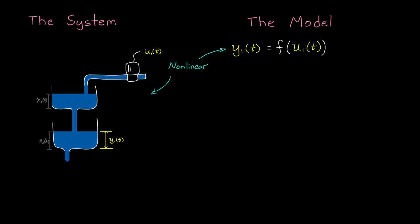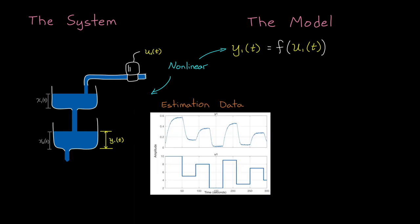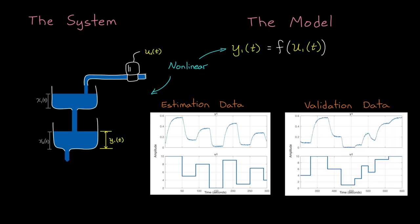We want a model that takes voltage as input and predicts the bottom tank water height over time. This is fundamentally a non-linear problem. However, since this is a system identification video and not a physical modeling video, we're going to use data to develop this model. I have two datasets from this system: the data we'll use to estimate the model, and the data we'll use to validate the model.